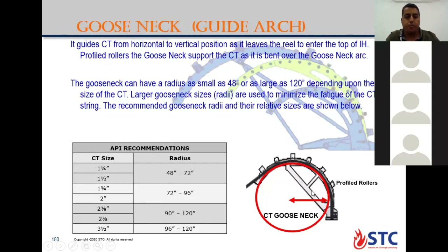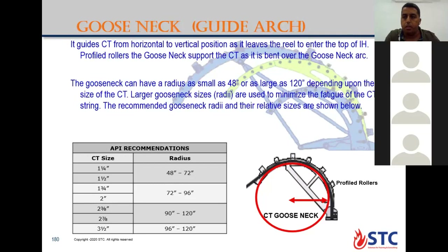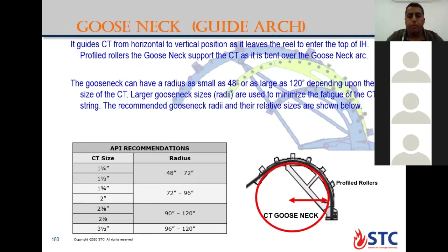Do you apply this recommendation? What size coil tubing do you use? We use 1.5 to 2⅜ inch coil tubing. For the gooseneck, we use 120 inch for all sizes — selecting the maximum to minimize fatigue of the coil tubing string, since this is the maximum bending point over the gooseneck.